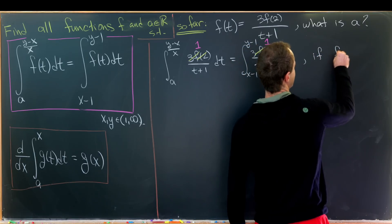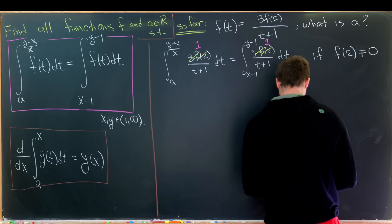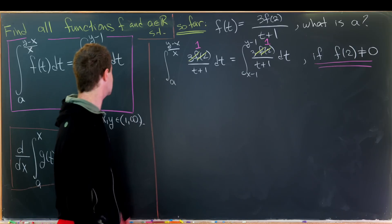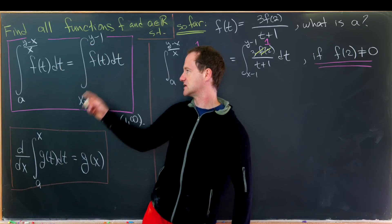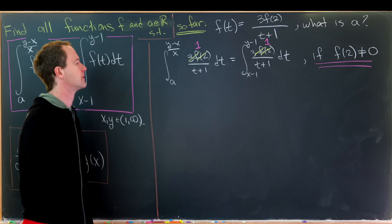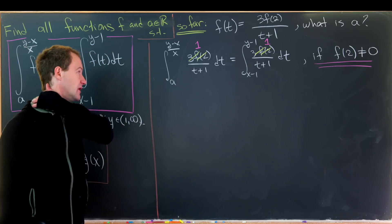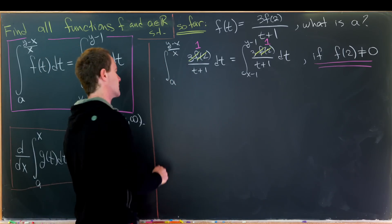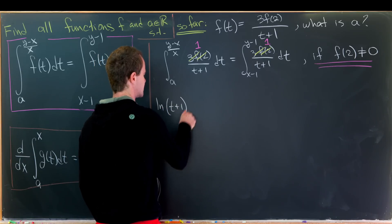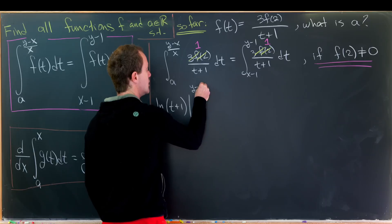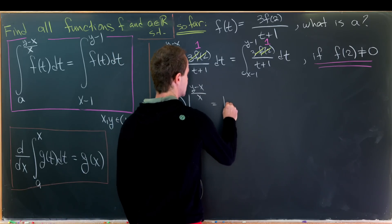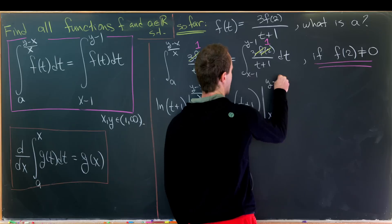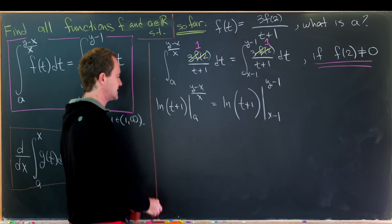If f(2) equals zero, then our function is just the zero function, which trivially satisfies the equation — not very interesting. Otherwise, applying the Fundamental Theorem of Calculus and taking the antiderivative 1/(t+1), we get ln|t+1|. This gives us ln(t+1) evaluated from a to (y minus x)/x equals ln(t+1) evaluated from x minus 1 to y minus 1.